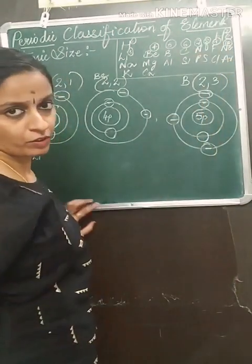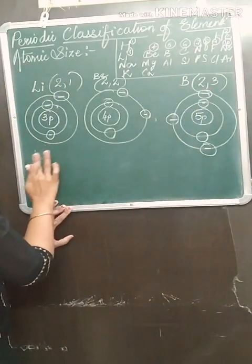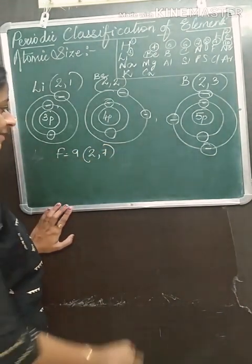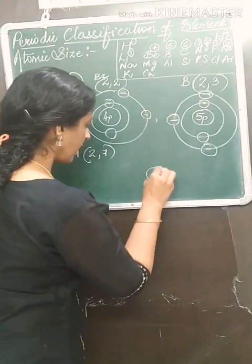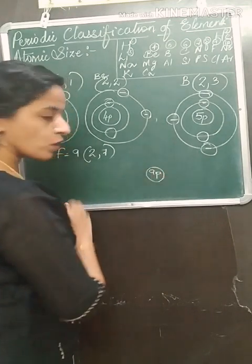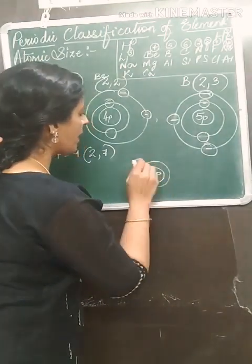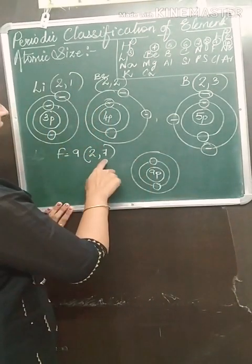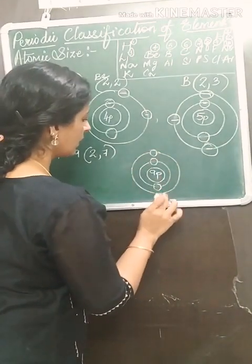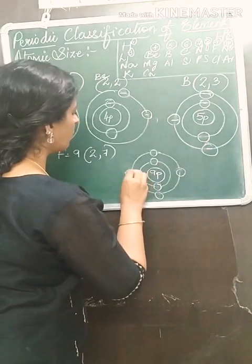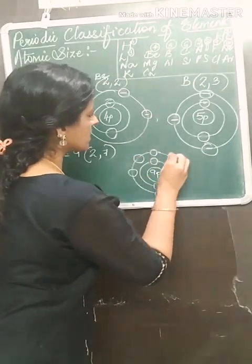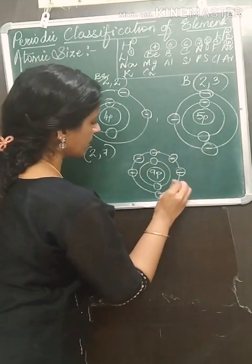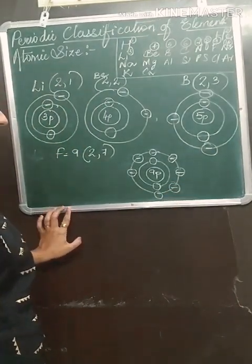Now let us talk about fluorine. Atomic number is 9, so the electronic configuration will be 2, 7. Fluorine will have a nucleus with 9 protons. The first shell has 2 electrons, and the outermost second shell will have 7 electrons.